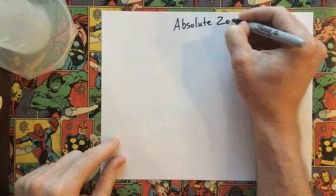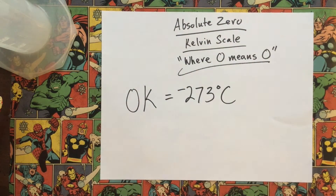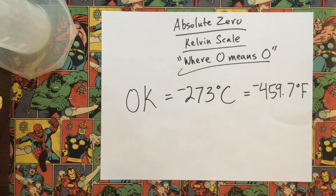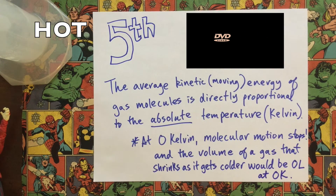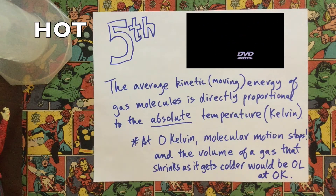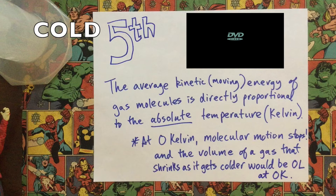Here are the corresponding degrees Celsius and Fahrenheit that equal absolute zero — zero Kelvin. Applying the fifth postulate, a hot gas will have a lot of kinetic energy and be moving a lot, as seen in the DVD logo. A cold gas will not have much kinetic energy, as seen with the DVD logo moving very slowly. If you get all the way down to zero Kelvin, that DVD logo would stop.